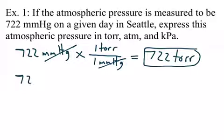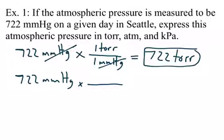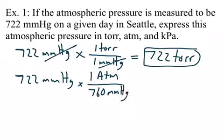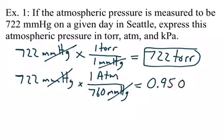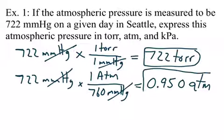Now let's convert millimeters of mercury into ATMs. According to your conversion sheet, for every one ATM there are 760 millimeters of mercury. If you cancel out the units and divide 722 by 760, you get 0.950 — that's three significant digits — as your answer in ATMs.